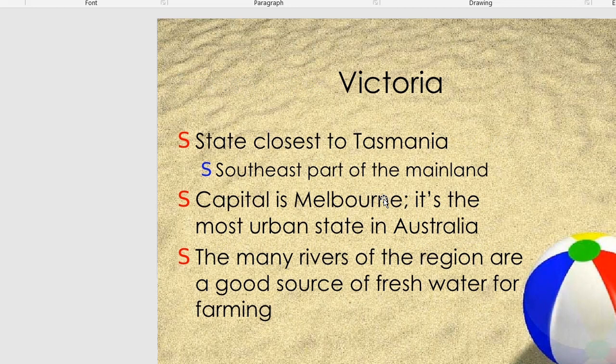Victoria is a state closest to Tasmania. Its capital is Melbourne. It is the most urban state in Australia.